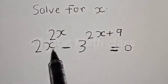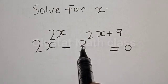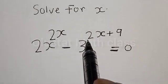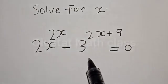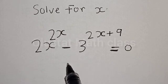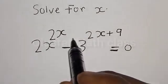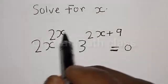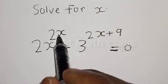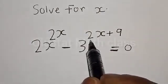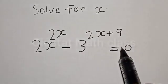Solve for s. We have the equation: 2s raised to power 2x, minus 3 raised to power 2x, plus 9, is equal to 0. Hi everyone, welcome to my class. In this class, we will quickly find the value of s from this given exponential equation: 2s raised to power 2x minus 3 raised to power 2x plus 9 is equal to 0.